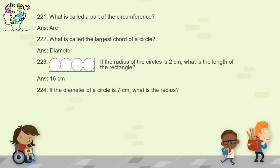Question 224: if the diameter of a circle is 7 centimeters, what is the radius? The radius is half the diameter, so 7 divided by 2 gives 3.5 centimeters.